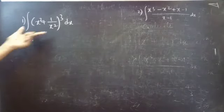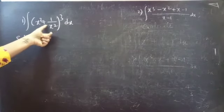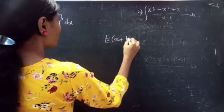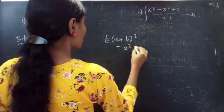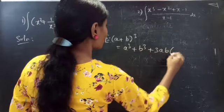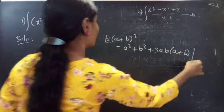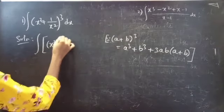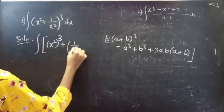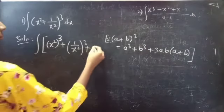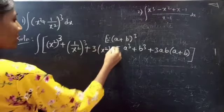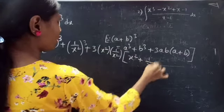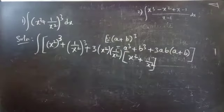Solution. We evaluate the integral of (x² + 1/x²)³. Since we know that (a + b)³ equals a³ + b³ + 3ab(a + b), we are going to apply this formula. Into dx.